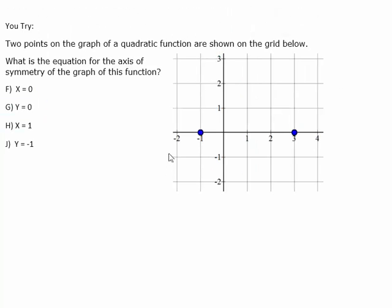Here's one for you to try — go ahead and pause the video and press play when you're ready to see the answer. If we count exactly in the middle between these two points, counting two from each side, one is exactly in the middle. So x equals positive one is our axis of symmetry.